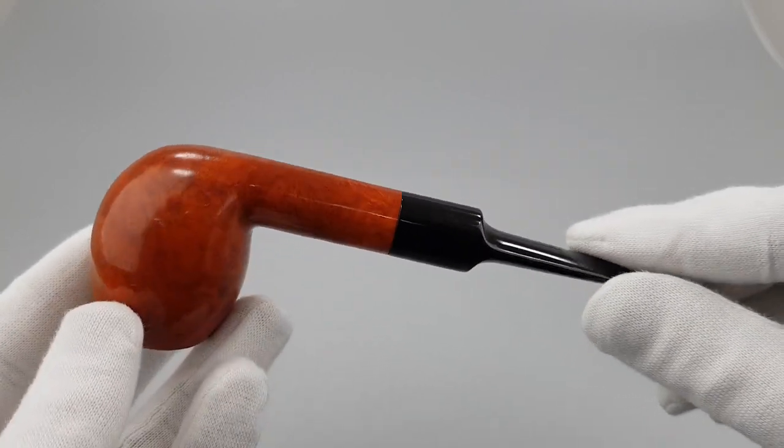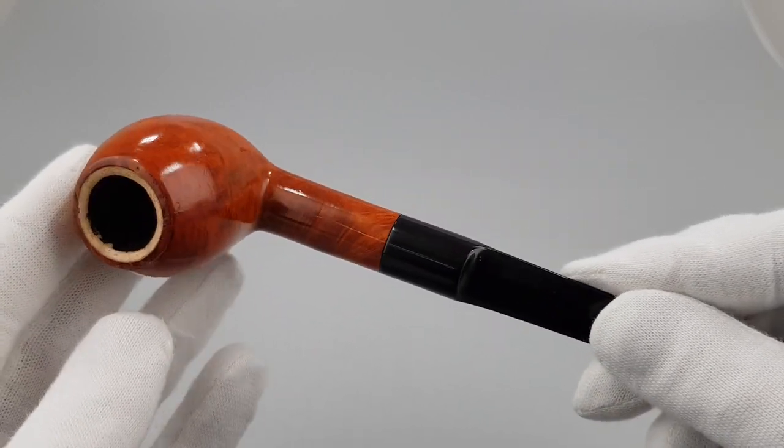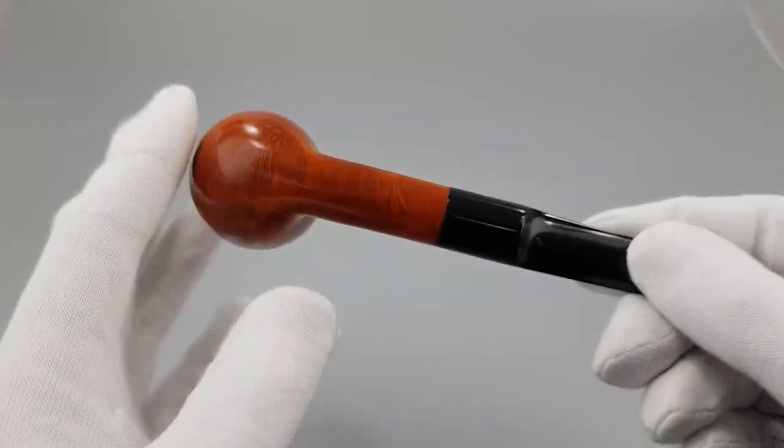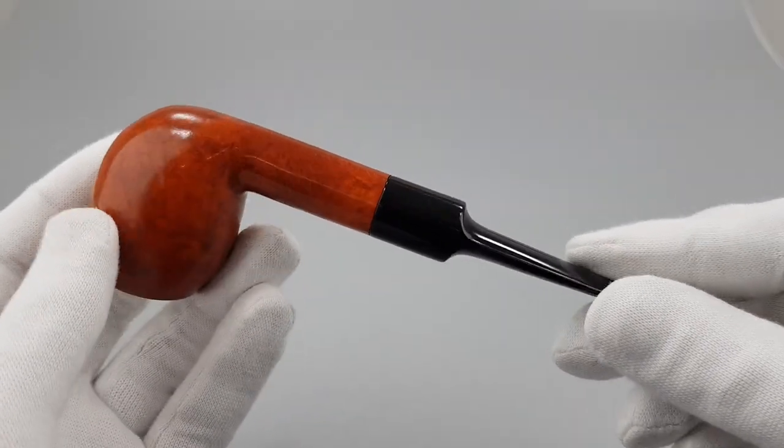We had a Royal Oldencoat that got sold a couple of days ago. It was a sandblasted finish half-bent briar pipe with no meerschaum insert in that one.